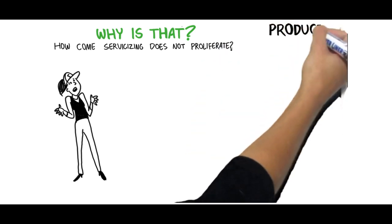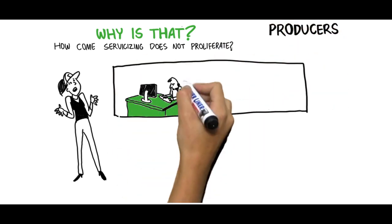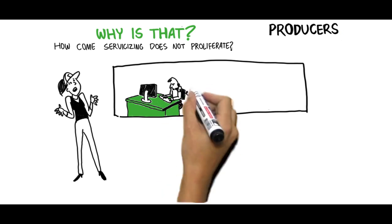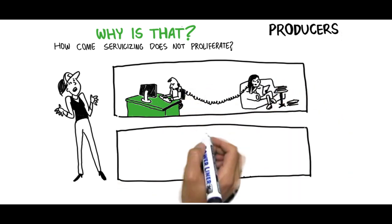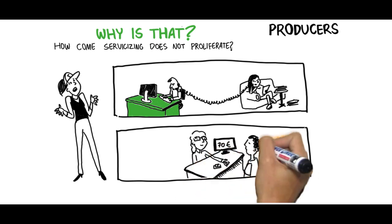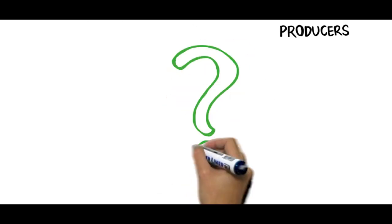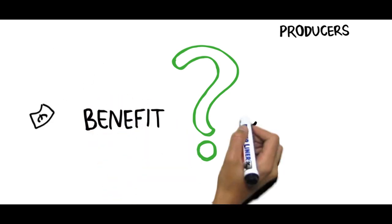Well, there are several possible reasons. First, the new business transaction between producers and consumers is more complex than regular purchasing and requires long-term engagement. Also, moving to servicizing involves uncertainty concerning the costs and benefits for the producers.